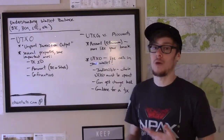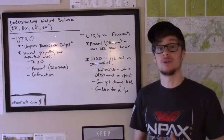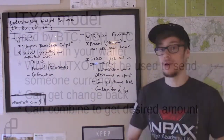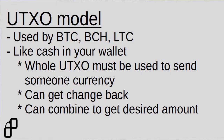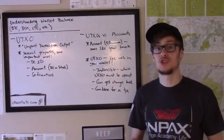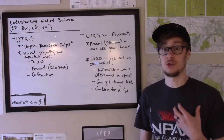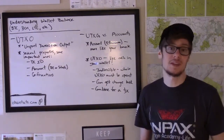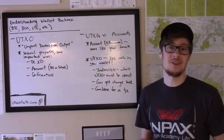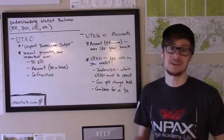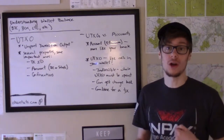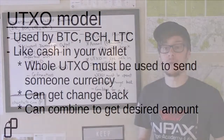The UTXO model functions a lot more like cash in your physical wallet. If you pull out your wallet you might have 1's, 5's, 10's, and 20's in your currency of choice. UTXOs function very similarly when you spend them in a new Bitcoin transaction. If you go to the store and have a dollar bill and want to buy something for 50 cents, you can't just tear that dollar bill in half and give it to the cashier as 50 cents of value — you have to give them the whole dollar. A UTXO works the same way in Bitcoin.